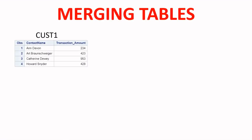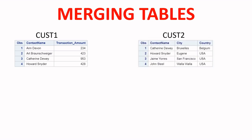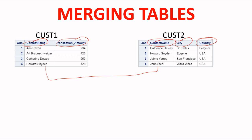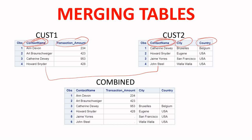Here we have the first table, customer one, with customer name and transaction amount, and the second table, customer two, with contact name, city, and country. The contact name column is the common variable in both tables. Once all requirements are fulfilled and the data is sorted, you can merge them to get a combined output.